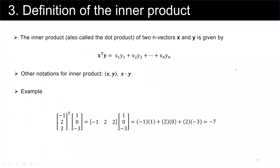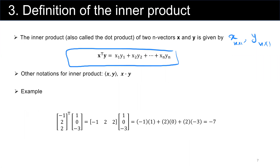Now we want to talk about the definition of inner product. The inner product — also called the dot product — of two n-dimensional vectors x and y is given by xᵀy, where both vectors are n by 1. We represent this as x·y or using angle-bracket notation. These are two alternative representations for the inner product.